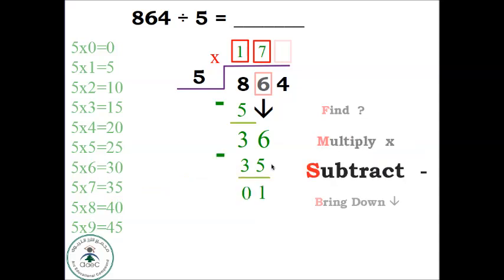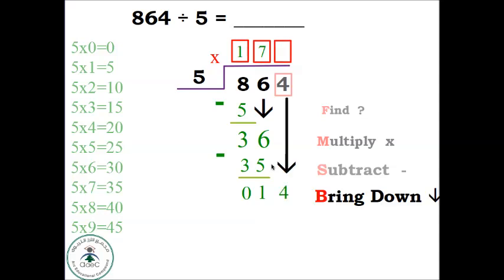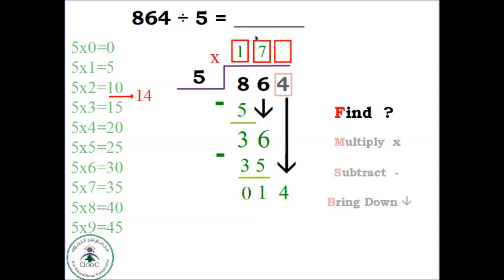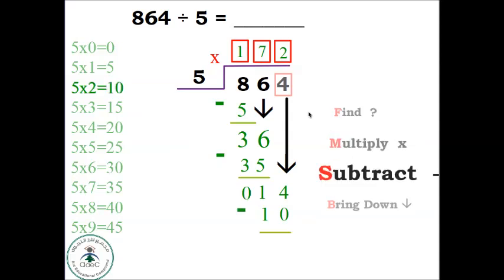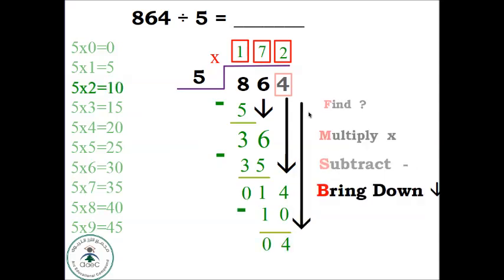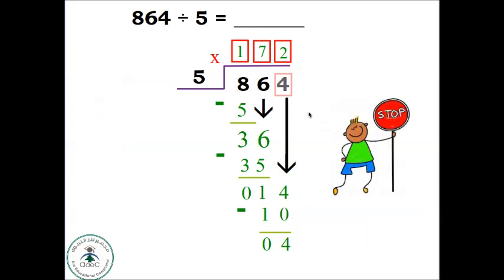We repeat again for the third digit. Find: 5 times what is 14 or less? 5 times 2 is 10. Multiply: 2 goes up, 10 goes down. Subtract: You get 4. Bring Down: Do we have more digits? No, no more digits. We can't bring down, so we stop.